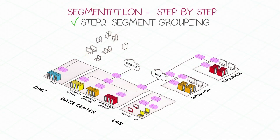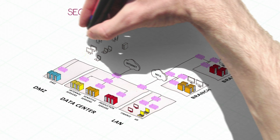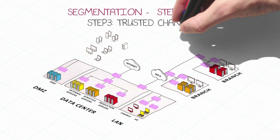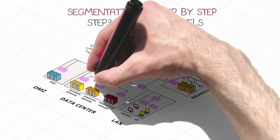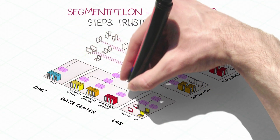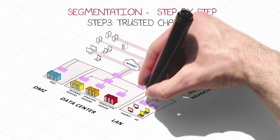Next, create encrypted trusted VPN channels so segments can communicate securely with each other.